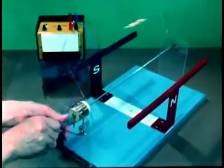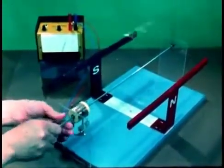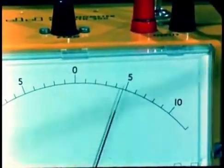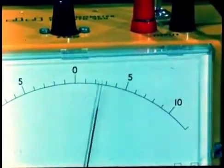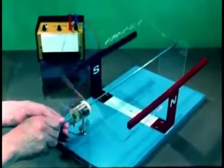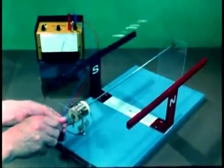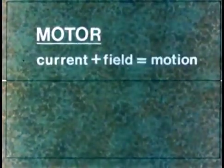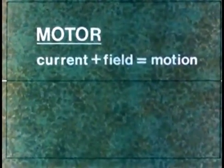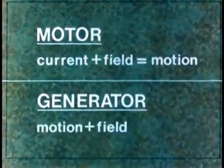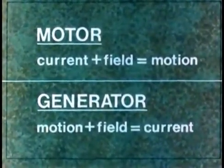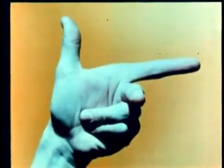Now let's take our simple motor and connect it to a current measuring instrument instead of to a voltage supply. If we make the armature spin in the field, a voltage is generated and a current flows. What was an electric motor has become a generator of electricity. So in a motor, current flowing in a magnetic field causes motion of the conductor across the field. In a generator, motion across the field causes current to flow in the conductor. And just as we had a right-hand rule for motors, we have a left-hand rule for generators.